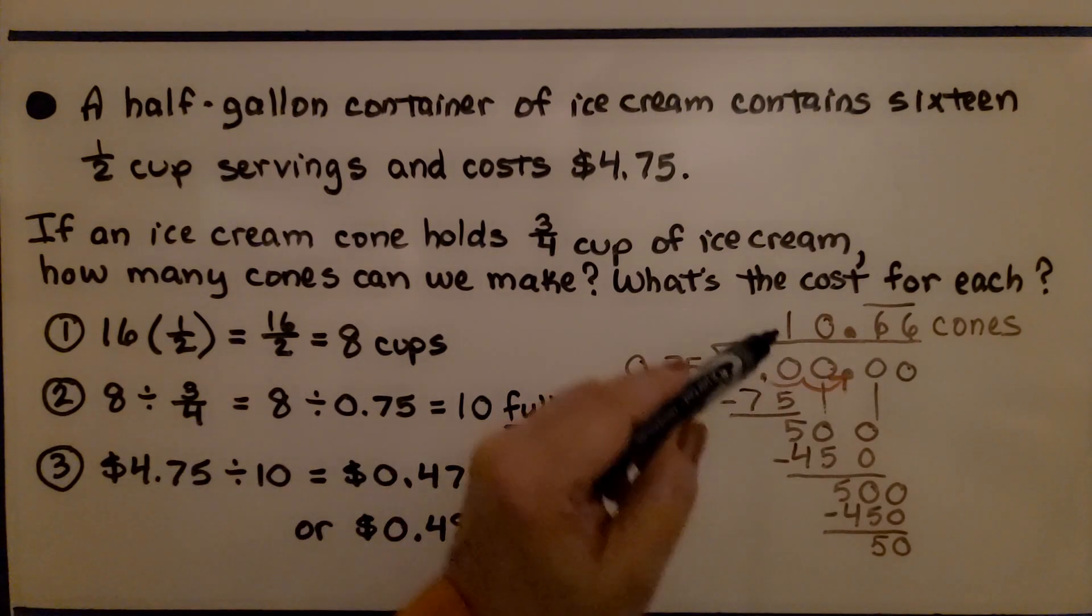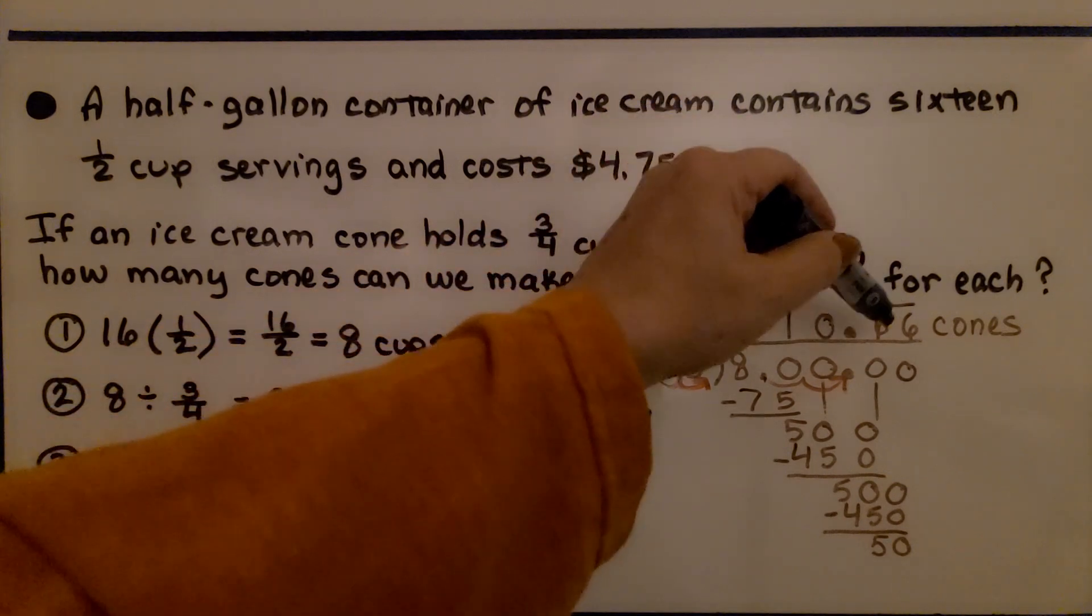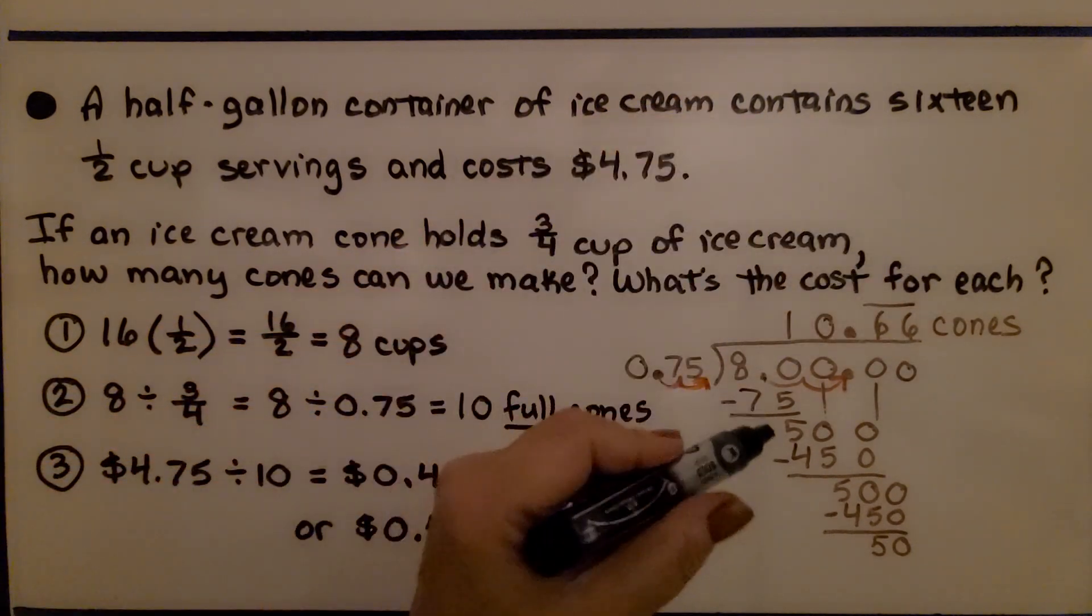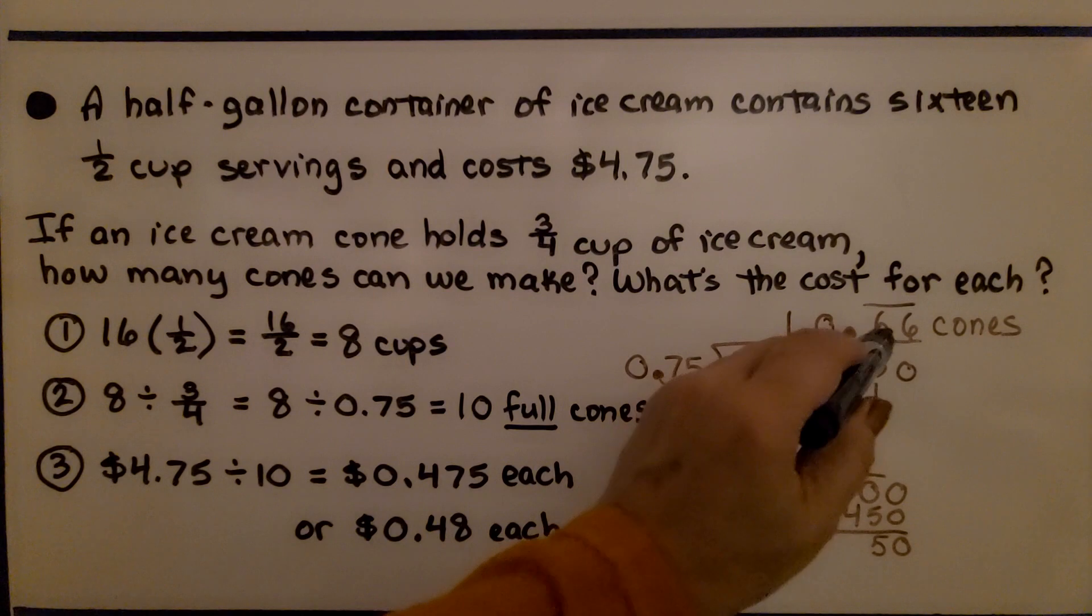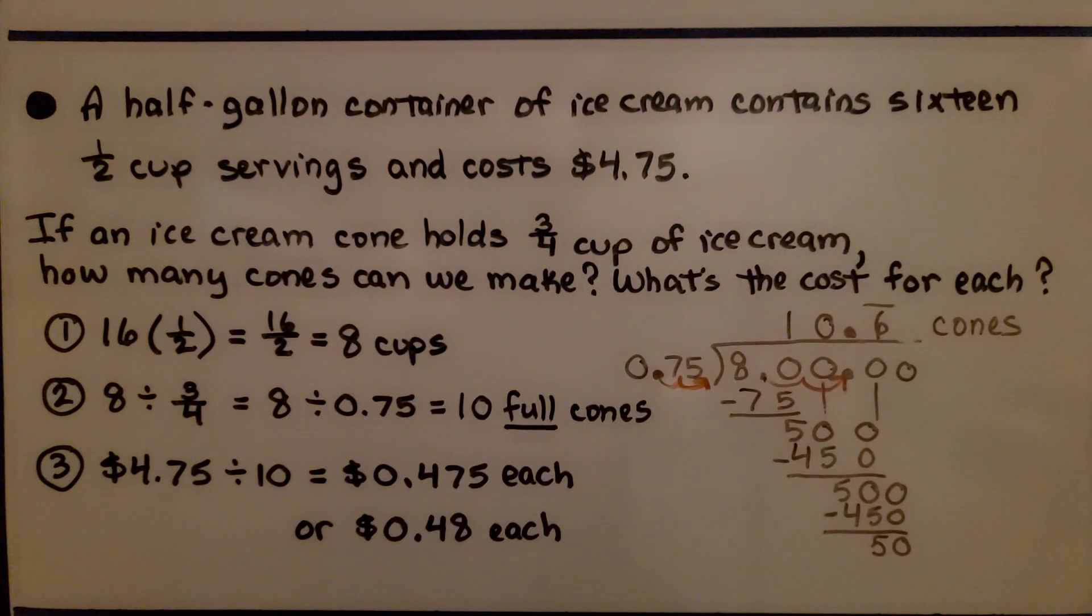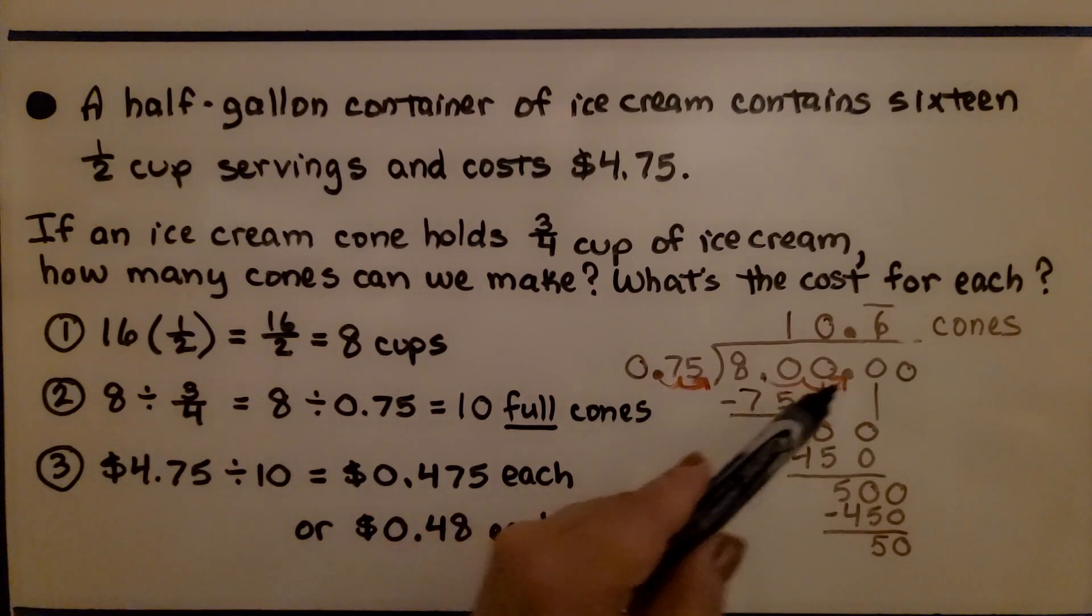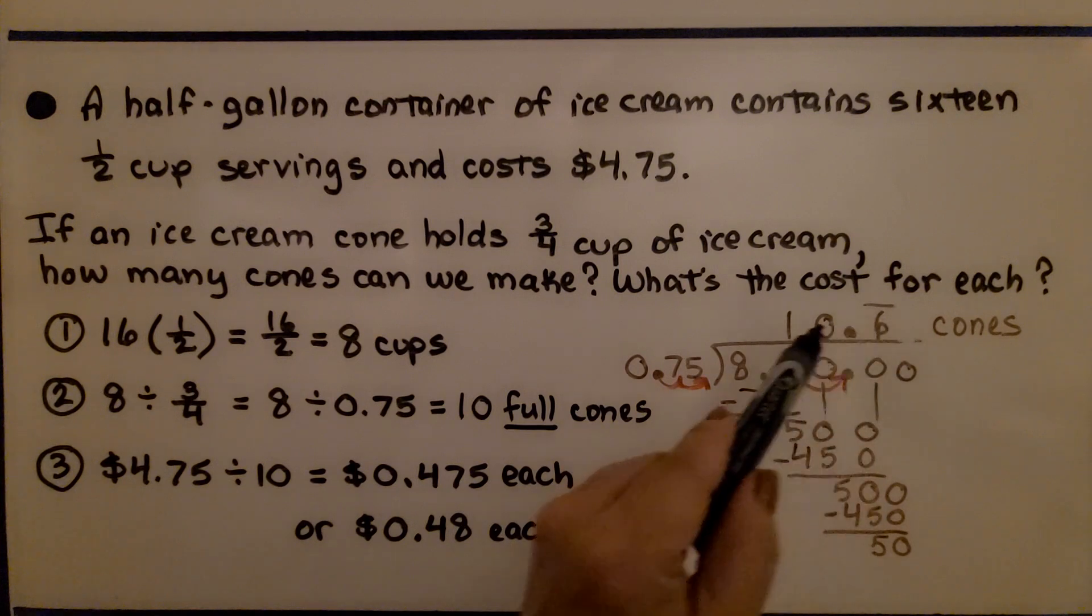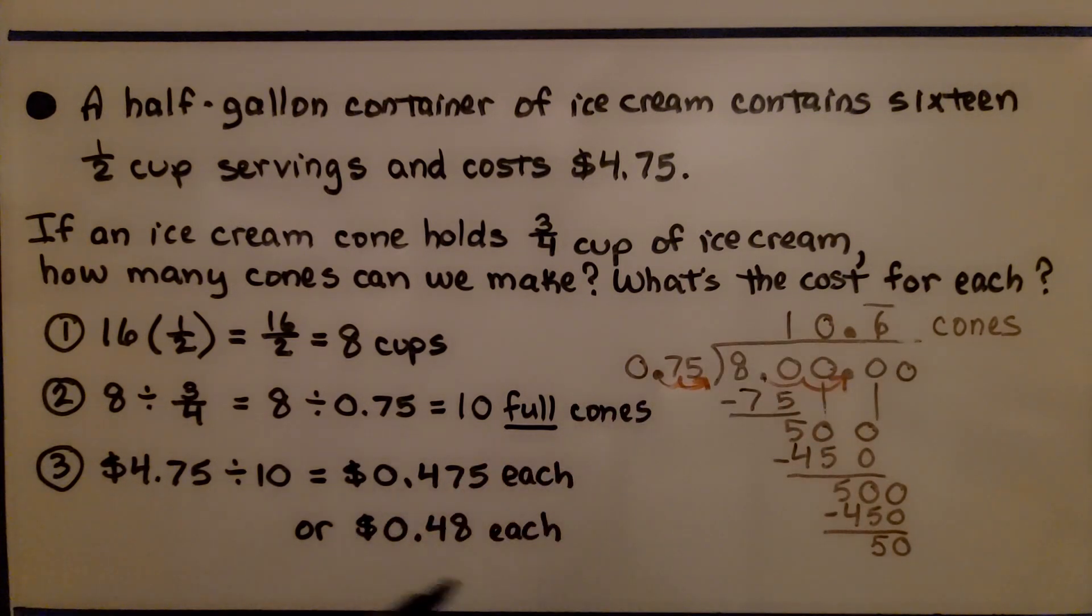We find that it's 10.6666 continues, so we can write the 6 with a bar over the top to show that the 6 repeats. It's a repeating decimal. We don't want to fill part of a cone, we want full cones, so that means we can do 10 full cones.